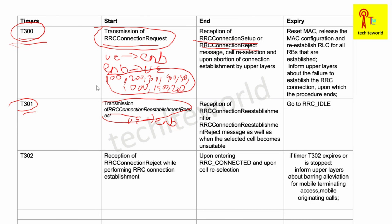T301 ends when the UE receives either an RRC Connection Re-establishment message or an RRC Connection Re-establishment Reject message. Upon expiry, the UE sets the RRC state to RRC Idle. The range of T301 is the same as T300: 100ms, 200ms, 300ms, 400ms, 500ms, 1000ms, or 1500ms.